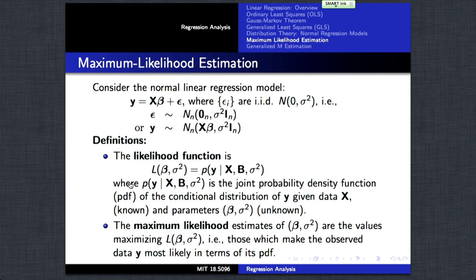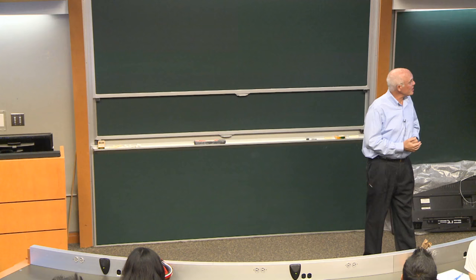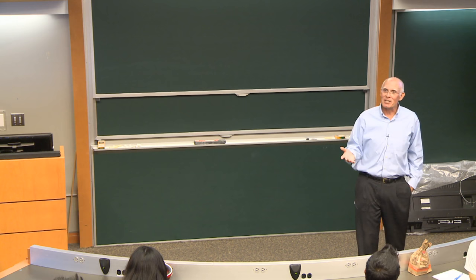We have a normal linear regression model. A dependent variable y is explained by a linear combination of independent variables given by a regression parameter beta. We assume that there are errors about all the cases which are independent and identically distributed normal random variables. Because of that relationship, the dependent variable vector y, which is an n vector for n cases, is a multivariate normal random variable.